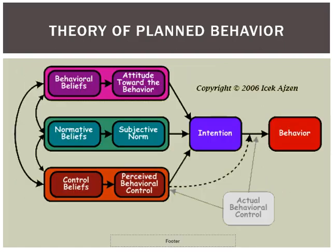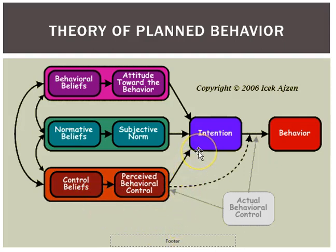Structurally it looks like this. At the top you see attitude towards the behavior, which is influenced by our behavioral beliefs. Then subjective norm, which depends upon our normative beliefs. And then perceived behavioral control, influenced by our belief as to whether the behavior is hard or easy. All of these influence our intention to participate in the behavior. If intention is high, the behavior will probably be practiced; if intention is low, chances are you're not going to participate in the behavior.